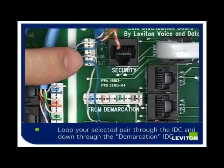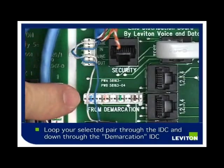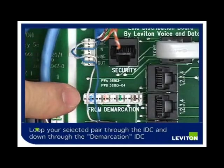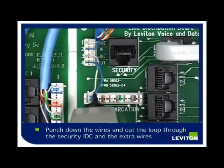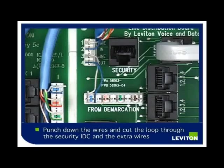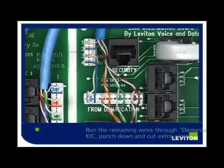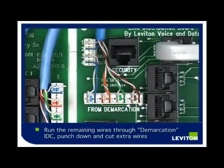Once you have selected your phone line, loop the wired pair through the IDC with the white wire on top and blue on the bottom, and run them down through the demarcation IDC. Punch these wires down and cut the loop through the security IDC and extra wire. Route your remaining three phone lines through the FROM demarcation IDC and punch them down.